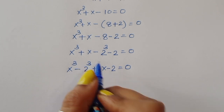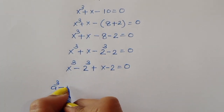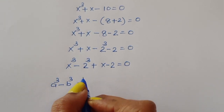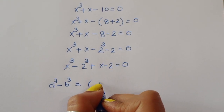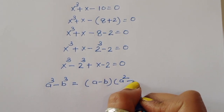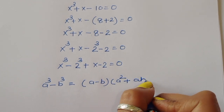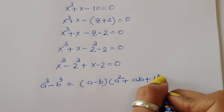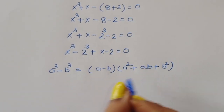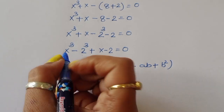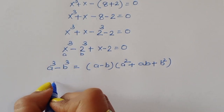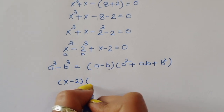Now x cube minus 2 cube — this is the formula of a cube minus b cube. The formula is: a cube minus b cube equals a minus b times a squared plus ab plus b squared. Applying this formula to x cube minus 2 cube, where a is x and b is 2, we get x minus 2 times x squared plus 2x plus 4.